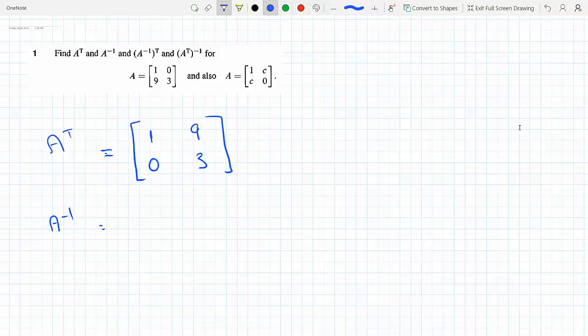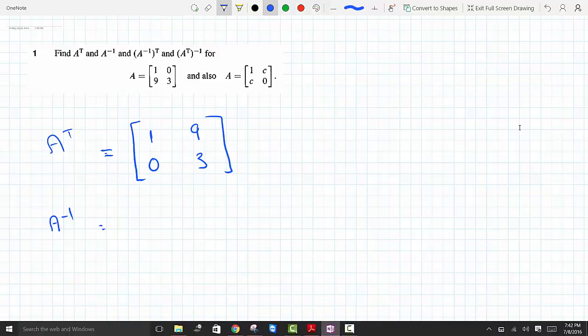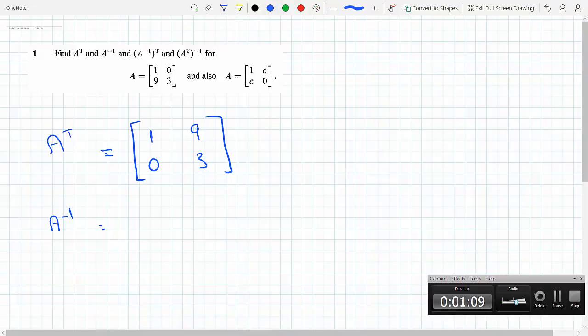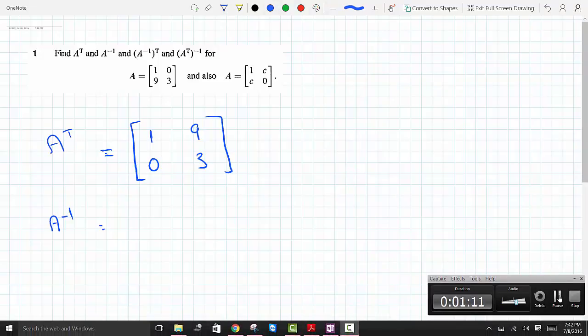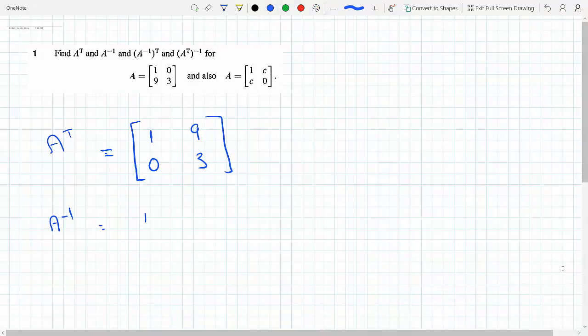A inverse—I'm going to do it the shortcut way. I've recorded other videos where I used Gauss Jordan, so if somebody is interested in that, they could see the other videos. So first, it's 1 over the determinant. The determinant of this matrix is 1 times 3—we cross multiply—1 times 3 minus 9 times 0, so that's 3 minus 0, so that's 3.